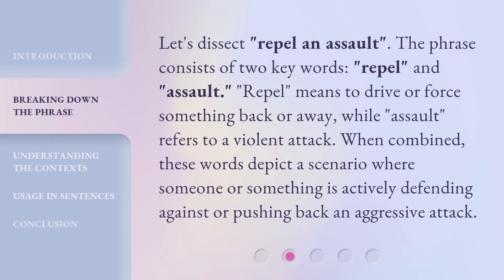Let's dissect Repel and Assault. The phrase consists of two key words: Repel and Assault. Repel means to drive or force something back or away, while Assault refers to a violent attack. When combined, these words depict a scenario where someone or something is actively defending against or pushing back an aggressive attack.